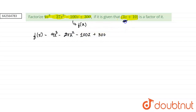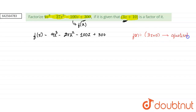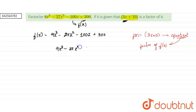So if we divide this f of x with this factor, then we get some quotient. If we divide f of x by the factor, that is 3z plus 10, we get a quotient. And this quotient is also a factor of f of x. So let us find the quotient first. We have 9z cube minus 27z square minus 100z plus 300 divided by 3z plus 10.